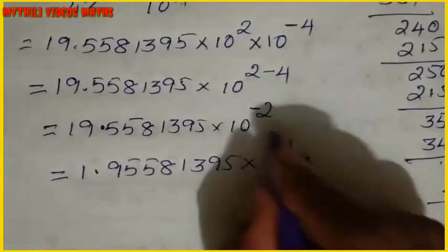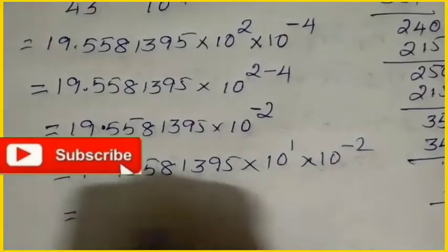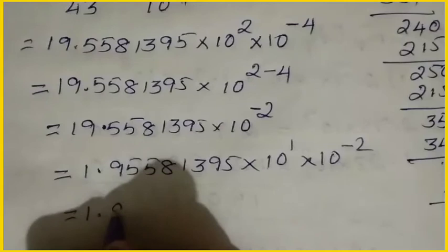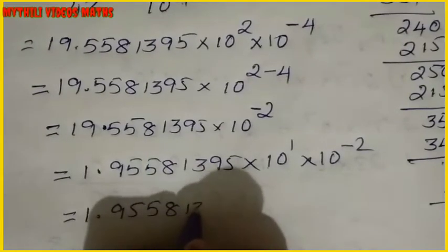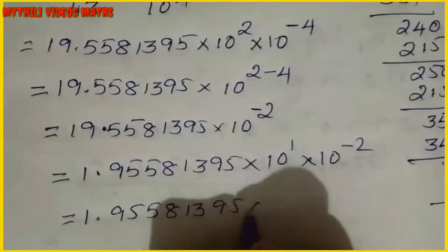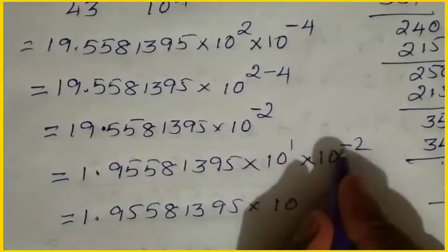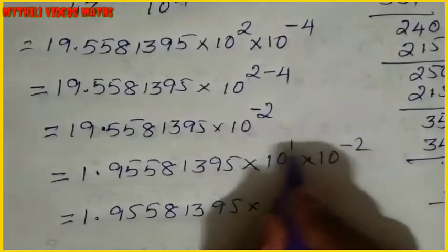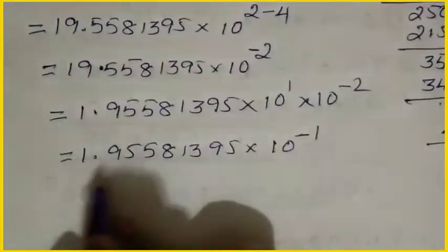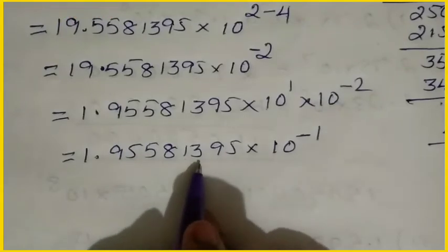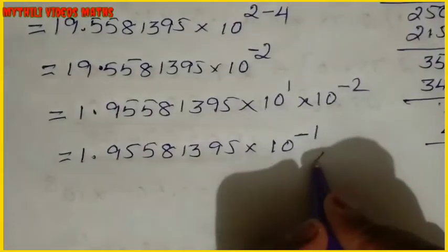We already have 10 power minus 2. Now converting 19.5581395 to proper scientific notation: move the decimal one place, giving 1.95581395 into 10 power 1. Combined with 10 power minus 2, the exponent is 1 minus 2 equals minus 1. So the final answer is 1.95581395 into 10 power minus 1.